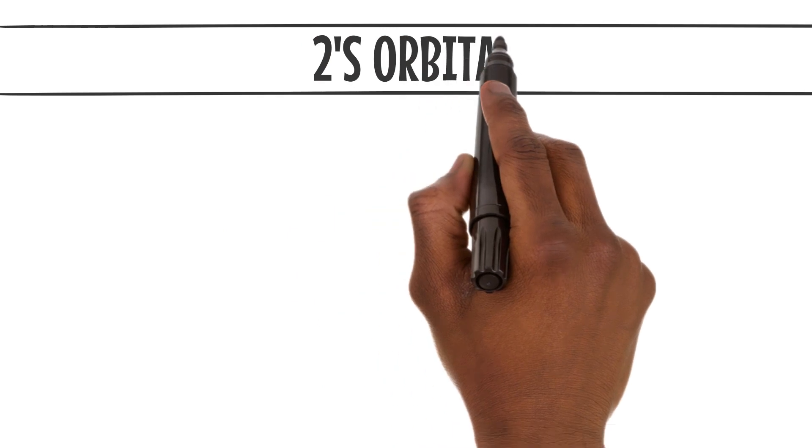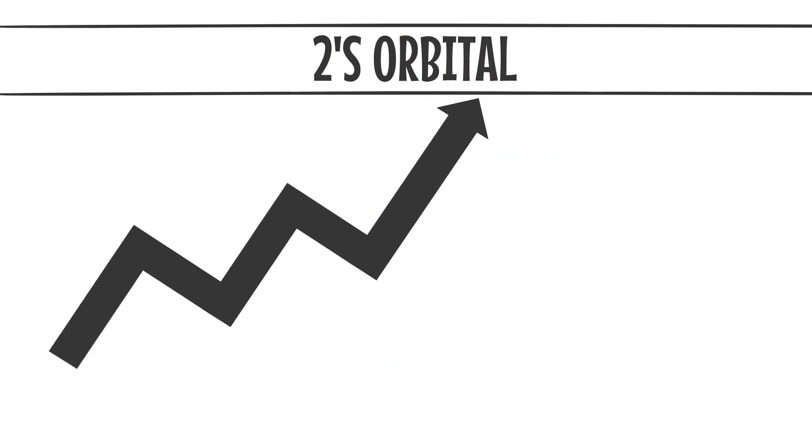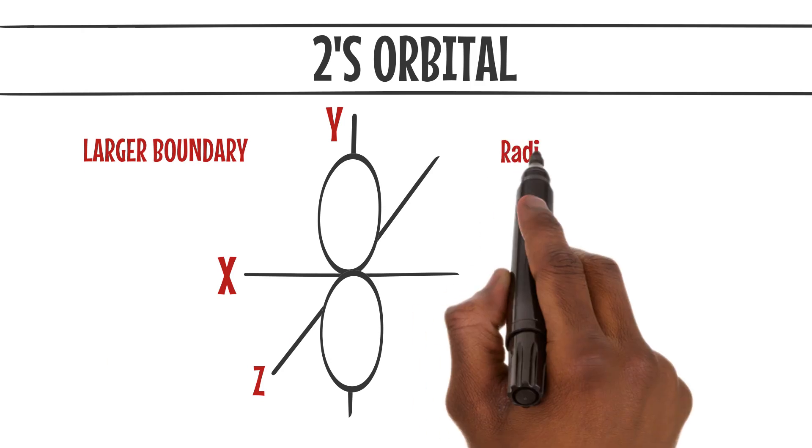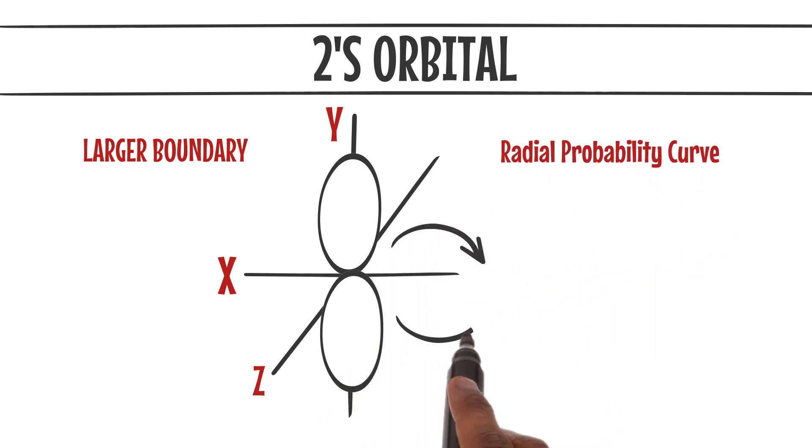As we move to higher energy levels, such as the 2s orbital, the orbitals become larger and more complex. The 2s orbital has a larger boundary surface and a radial probability curve with 2 maxima, indicating the presence of two regions with high electron probability.